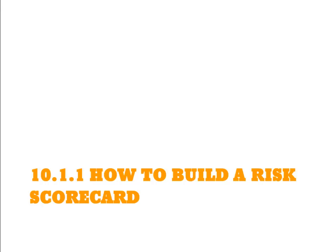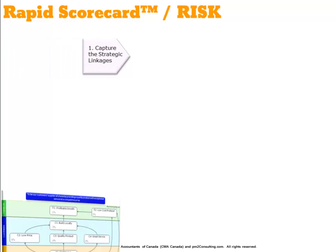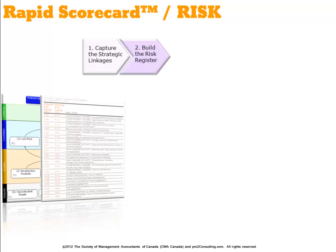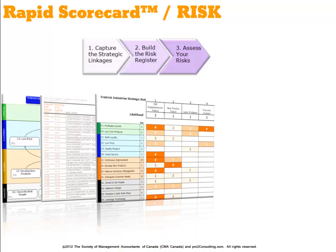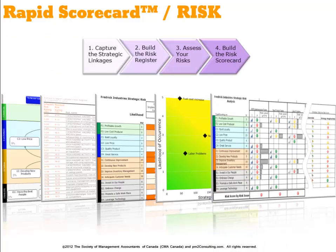Let's take a more detailed look at how we're going to be helping you build this risk scorecard. There are basically four phases we need to take. Step one is capturing your strategic linkages through a strategy map with priorities. Secondly, we need to build up your risk register to identify where risks might be occurring in your organization. The third step is to assess where those risks are impacting each strategic objective, and out of this we'll provide a traditional heat diagram showing where those risks are occurring. And finally, we can take all that information along with performance metrics to build out a risk scorecard. Let's take a look at each one of these steps.